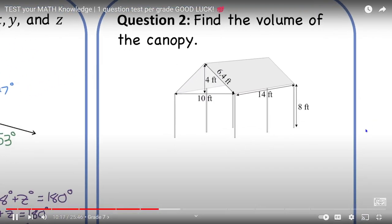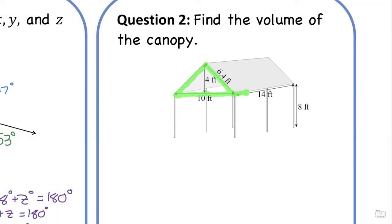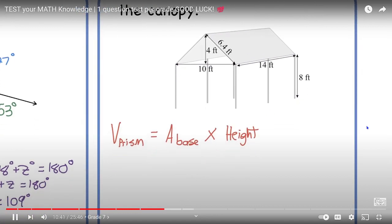Let me zoom in on the canopy. Notice this canopy is made up of two shapes. There is a triangular-based prism at the top of the canopy, and there is a rectangular-based prism at the bottom of the canopy. So we need the volume of both of those shapes. It'll be important for you to remember that the volume of any prism...